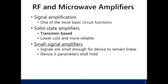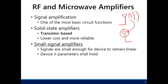RF and microwave amplifiers are used for signal amplification. They are important for communication systems because we want to boost our power at the antenna — we want that power to be very large — so that any transmitted signal will be received by the receiving antenna. But according to free space path loss, the signal received by the receiving antenna will be very weak.